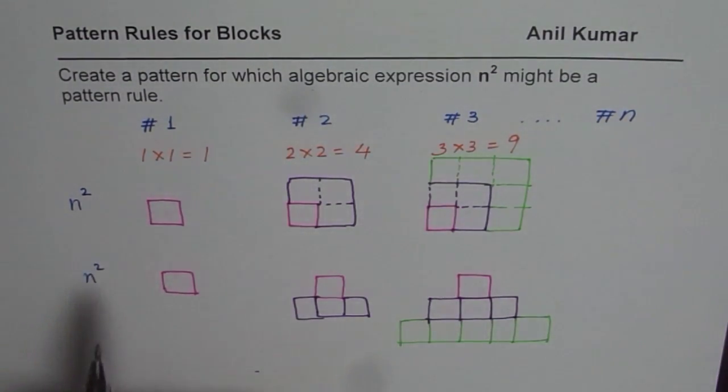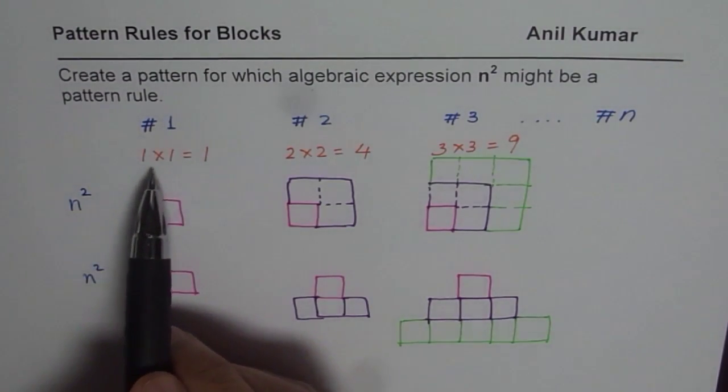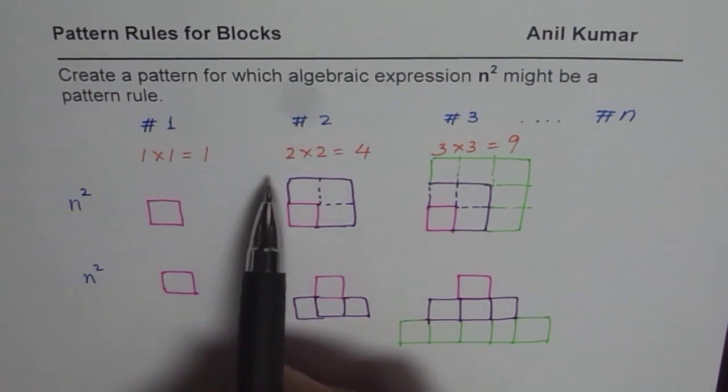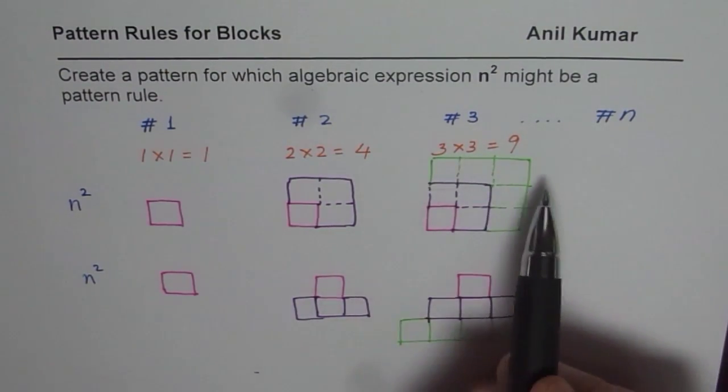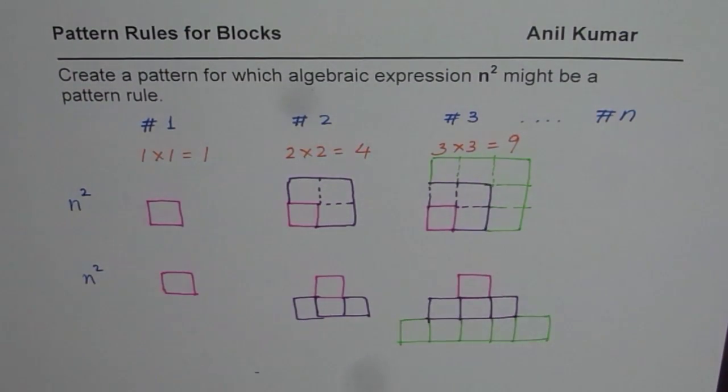Do you understand now? So n² means n if it is 1, 1 times 1. If it is 2, 2 times 2. And if it is 3, 3 times 3. And you can continue this for a couple of more figures and see it for yourself that if you have 100 blocks, how many figures can you make like this? I hope that you find this interesting. Thank you and all the best.